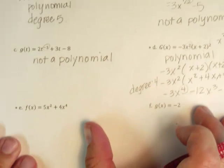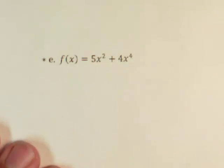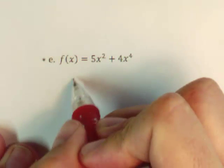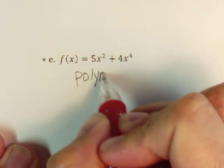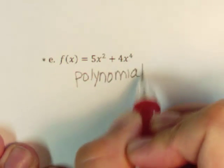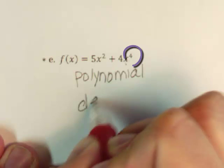Looking at letter E, both of these exponents are non-negative integers. So this is a polynomial. And this has a degree of 4.